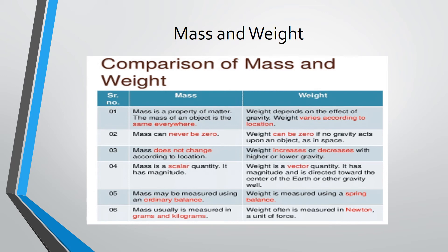Mass is a scalar quantity. It has magnitude. Weight is a vector quantity. It has magnitude and is directed toward the center of the earth or other gravity well.